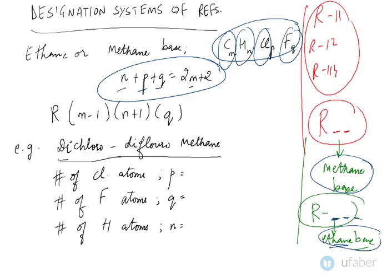As we discussed above, when we have a refrigerant R, the first digit from the right hand side, Q, designates the number of fluorine atoms. The second digit from the right indicates the number of hydrogen atoms, and the third digit from the right side designates the number of carbon atoms.